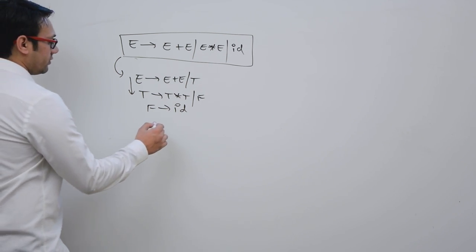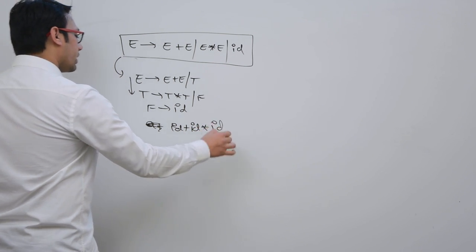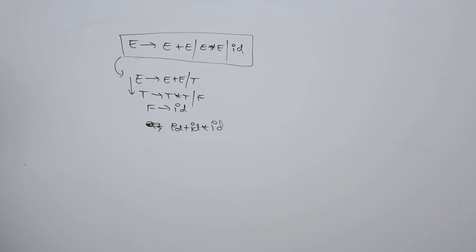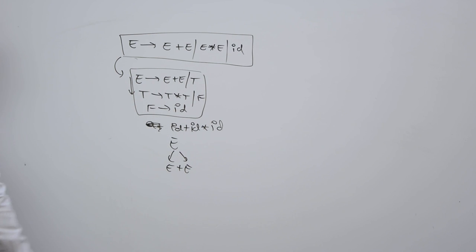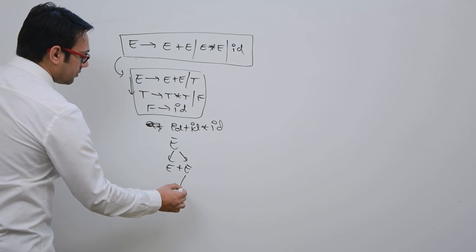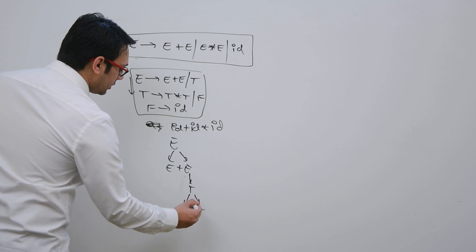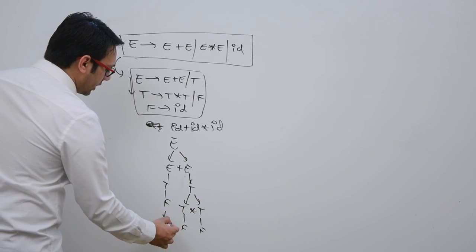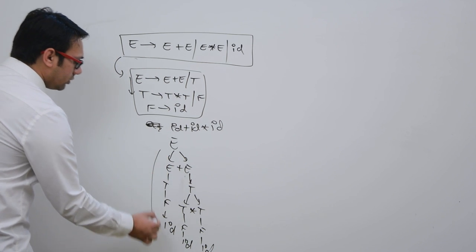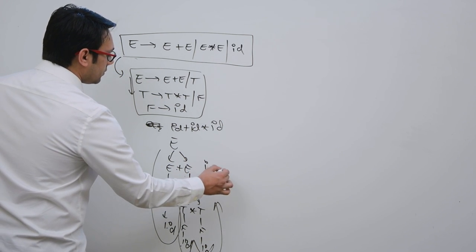For example, if you have a string like ID plus ID multiplied by ID, can you generate two different parse trees for this string from this grammar? We can do E derives E plus A. This is the start symbol, and further this E can be replaced by T. This T can generate T star T. This T can generate F, which can generate ID. This can generate ID, and this can generate ID. So the string we are generating here is ID plus ID multiplied by ID.